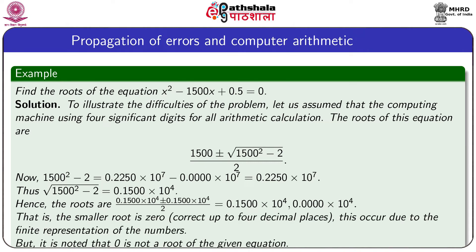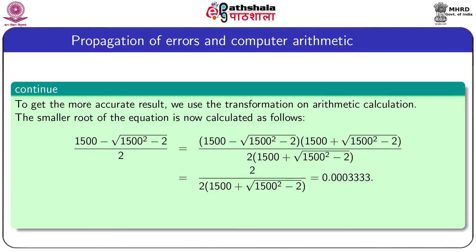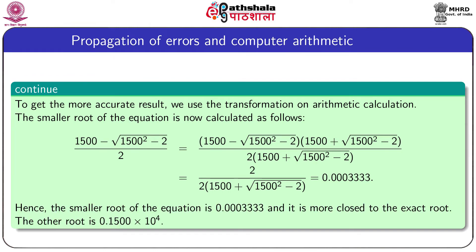Note that 0 is not a root of the given equation. To overcome this error, an alternative method is used: to find the second root, we take the minus sign before the discriminant, then multiply numerator and denominator by the conjugate of the numerator. After simplification, the smaller root becomes 0.0003333. Hence the roots are 0.1500 × 10⁴ and 0.0003333, correct to 4 significant figures, which is much closer to the exact root.